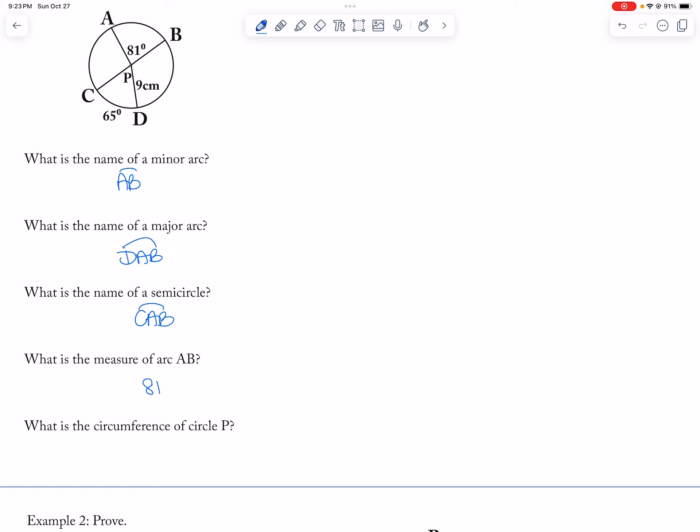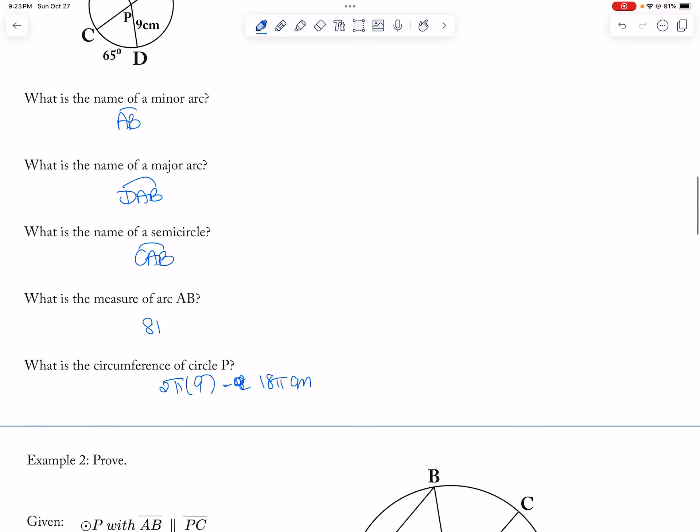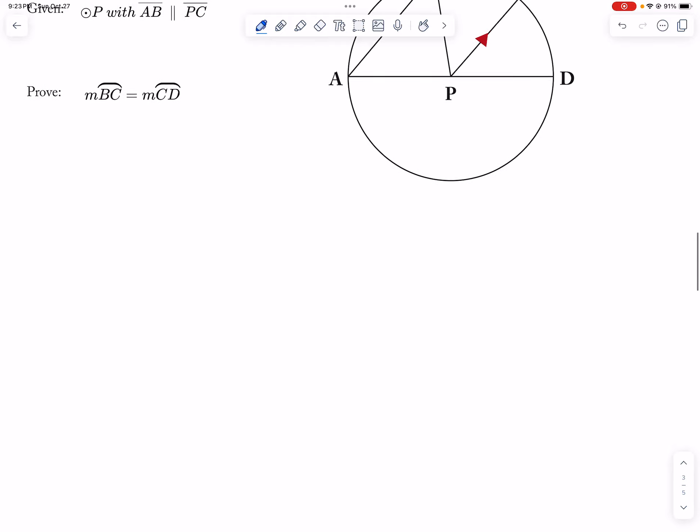So, 2 pi, and then our radius is 9. So, that is 18 pi centimeters. And then we skip the proof. And that's it for this section.